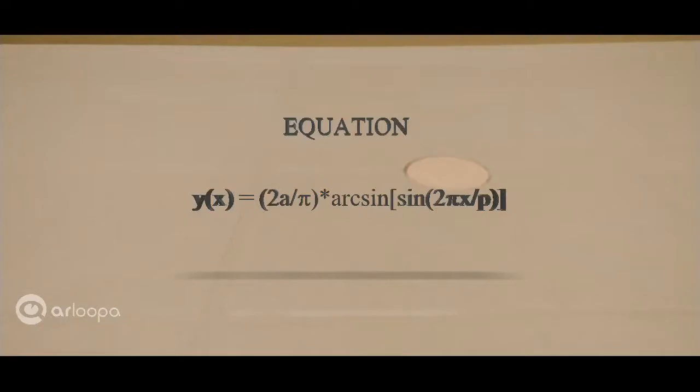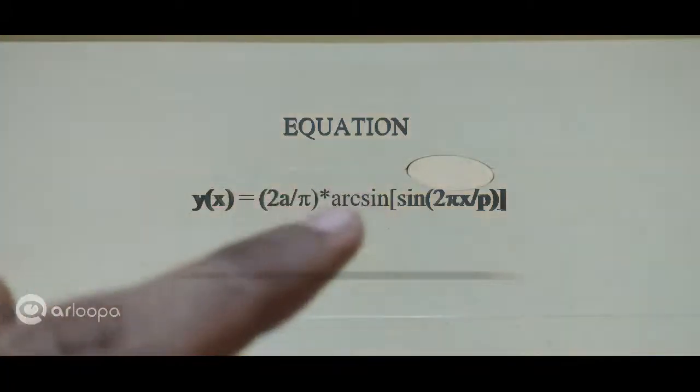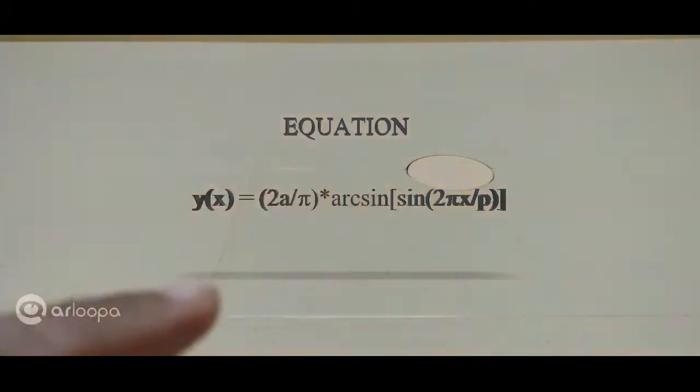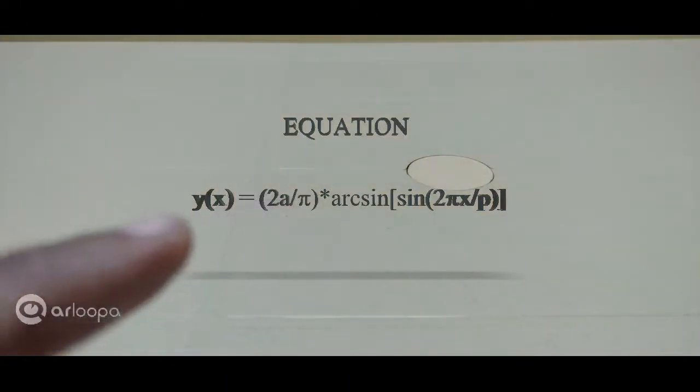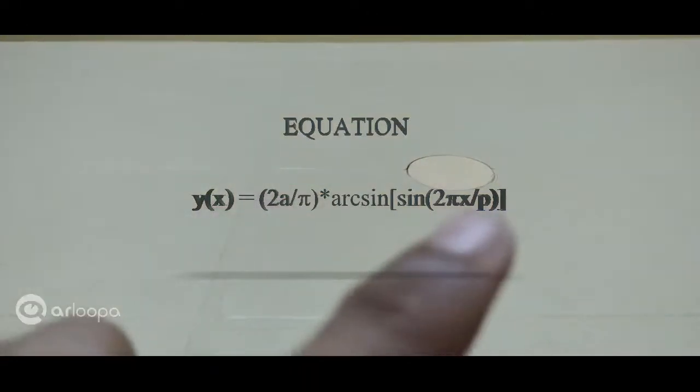The equation of a triangle wave is given by the sine and the arc sine functions. Here, A is the amplitude, X is the displacement, and P is the period.